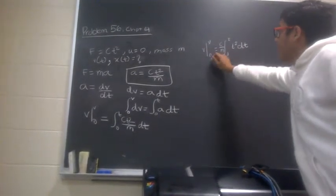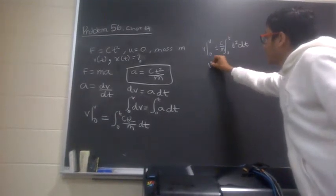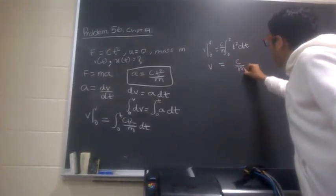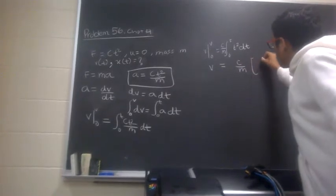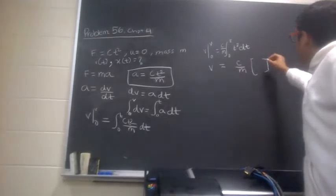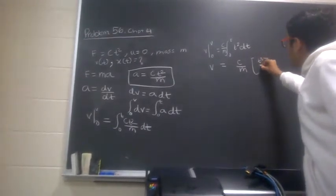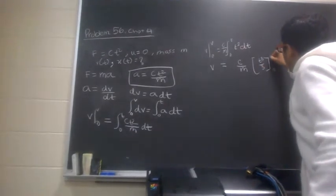And now, v evaluated at v minus v evaluated at 0 will just be v, is equal to c over m, and then we know that the integral of t squared is t cubed over 3, evaluated at 0 and t.